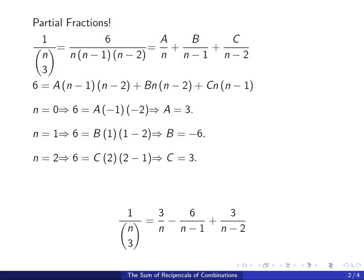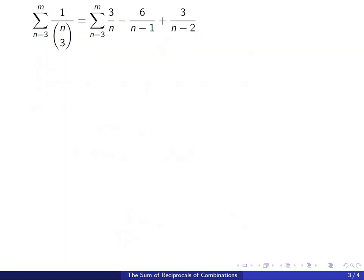So to summarize what we got is 1 over n choose 3 is equal to 3 over n minus 6 over n minus 1 plus 3 over n minus 2. So now we're going to evaluate this sum.